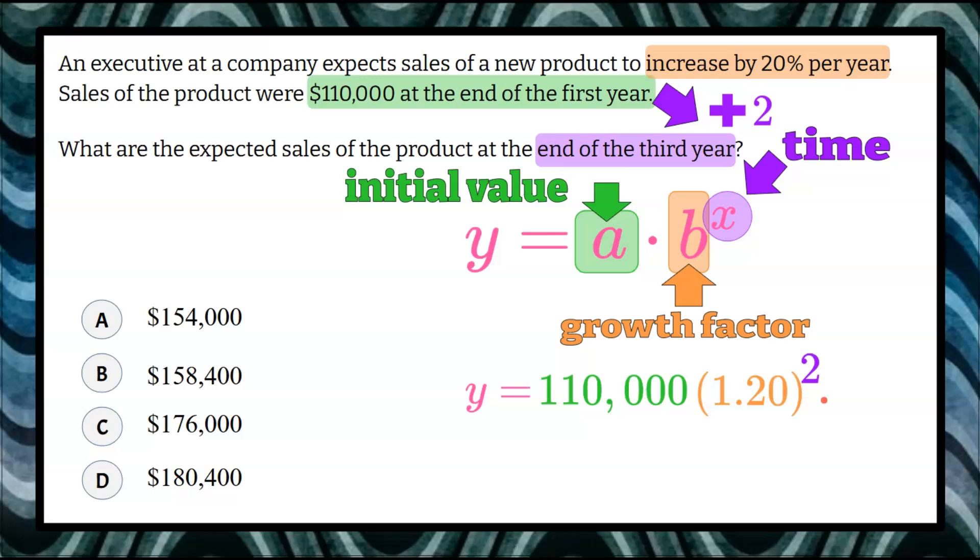All right. Now to evaluate this expression and solve for y, we're going to do our power first. In your calculator, 1.2 squared multiplied by 110,000. So 1.2 squared—you might on your calculator have to hit equals.